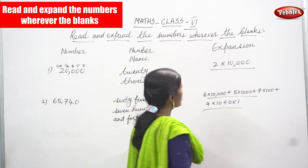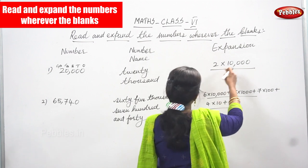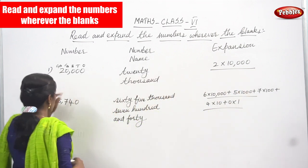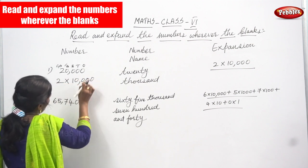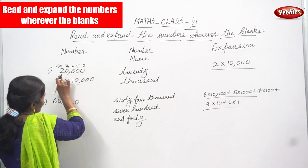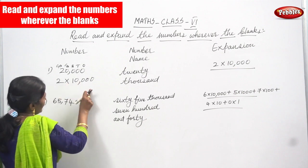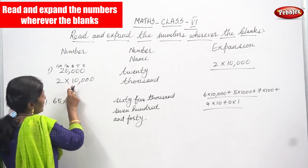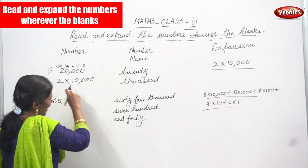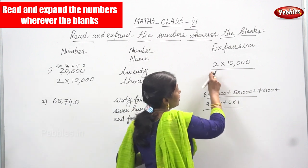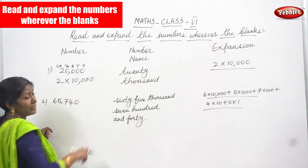After that I have written the expansion. So 2 into 10,000 — it means 2 is going to multiply by 10,000 because this is 20,000. So 2 into 10,000, you multiply only the numbers: 2 into 1 gives 2, and after that you add all the four zeros. That is 2 into 10,000 equals 20,000.